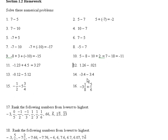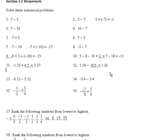1.26 minus 0.021: we're subtracting off a smaller number. Line up the decimal point — we have 1.260 minus 0.021. Doing the subtraction: 10 minus 1 is 9, 5 minus 2 is 3, 2 minus 0 is 2, and 1 minus 0 is 1. So the answer is 1.239.